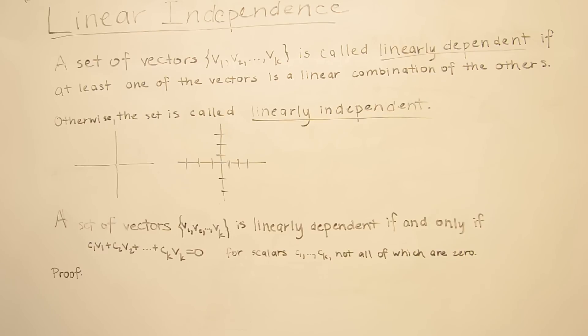This applies only to sets of size greater than 2, because if there's just one vector and it equals 0, it's linearly dependent. And if it's not 0, then it's linearly independent.